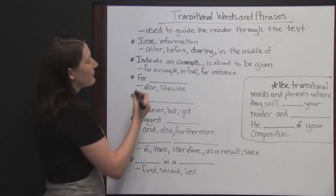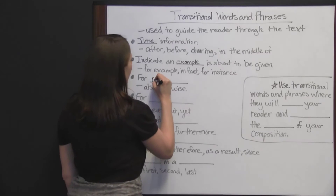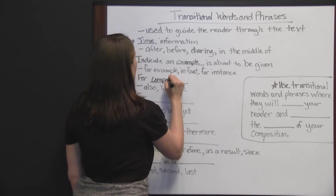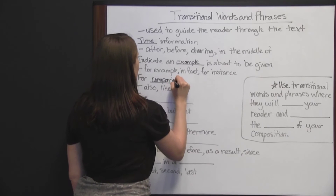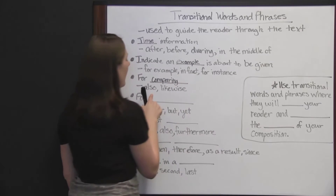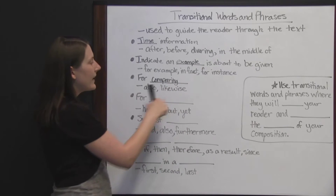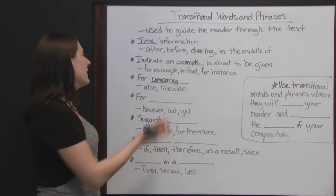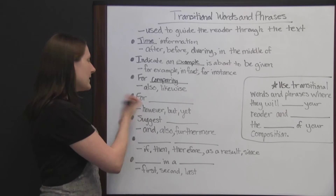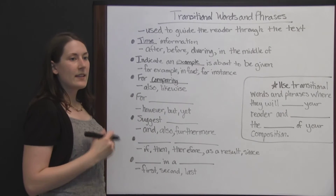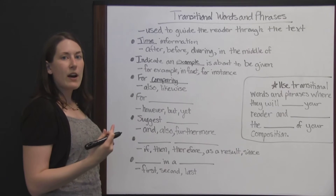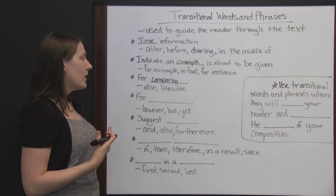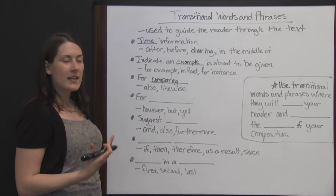Transitions can be used for comparing — saying how two things are alike. Words like 'also' and 'likewise' signal comparison. For example: 'This is also like this,' or 'Likewise, we can look at how dogs are good companions.'